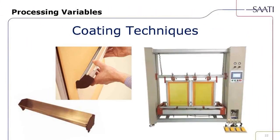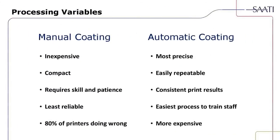Variable coating techniques: there are two — manual and auto. Manual coating is inexpensive, generally how most start out, and compact for easy storage. However, it requires skill and patience, can be the least reliable, and about 80% of people are doing it incorrectly. The advantage of an automatic coater is that it's the most precise and consistent screen available — anyone can press the button and have all screens consistent and repeatable, with consistent printing results and the easiest process to train staff, though it is more expensive.